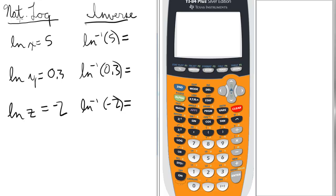So, if we have the natural log format, natural log of x equals 5, in the inverse natural log form, that would be ln to the negative 1 of 5.